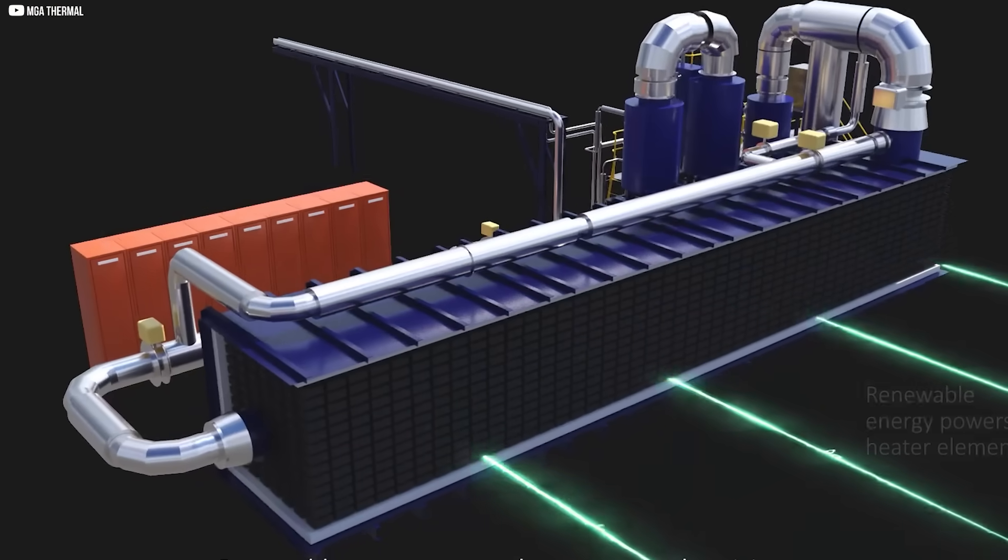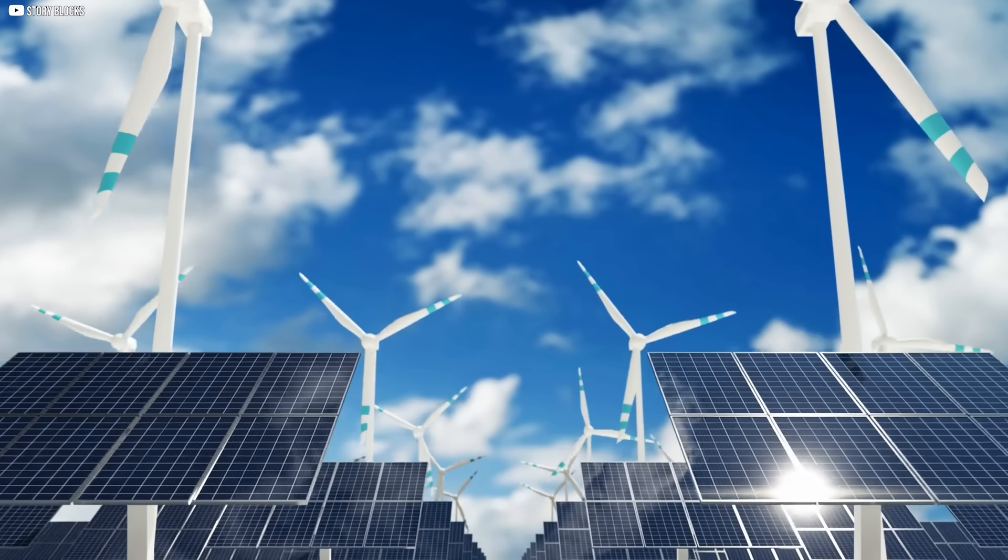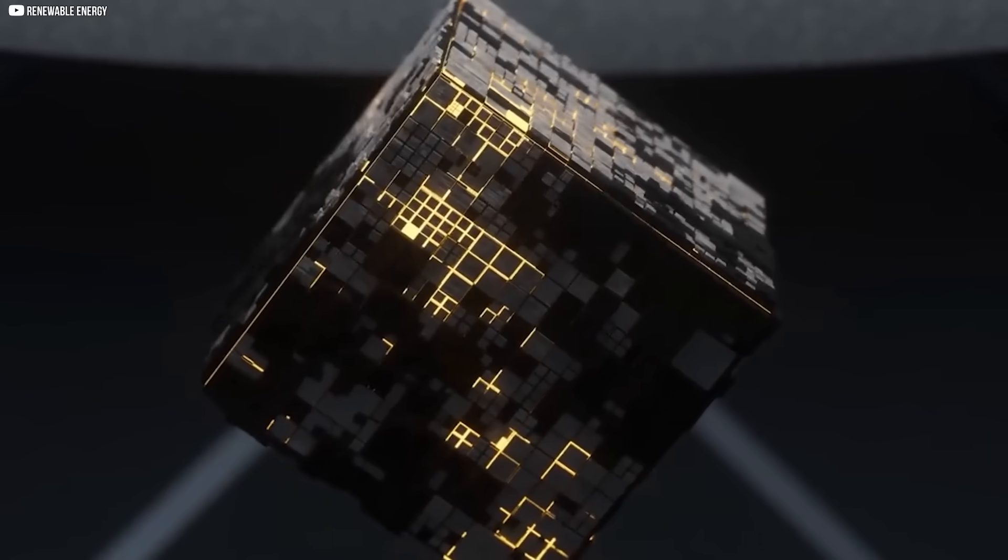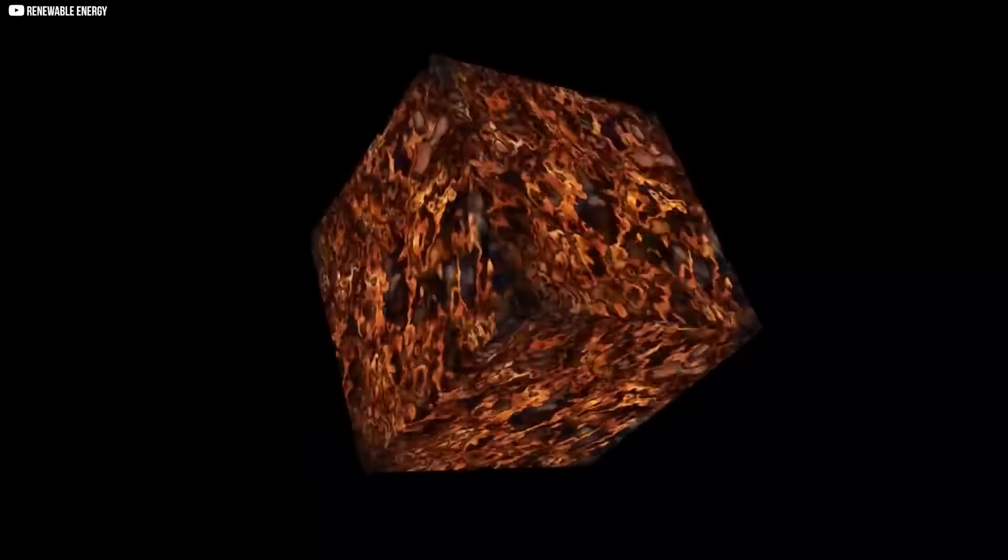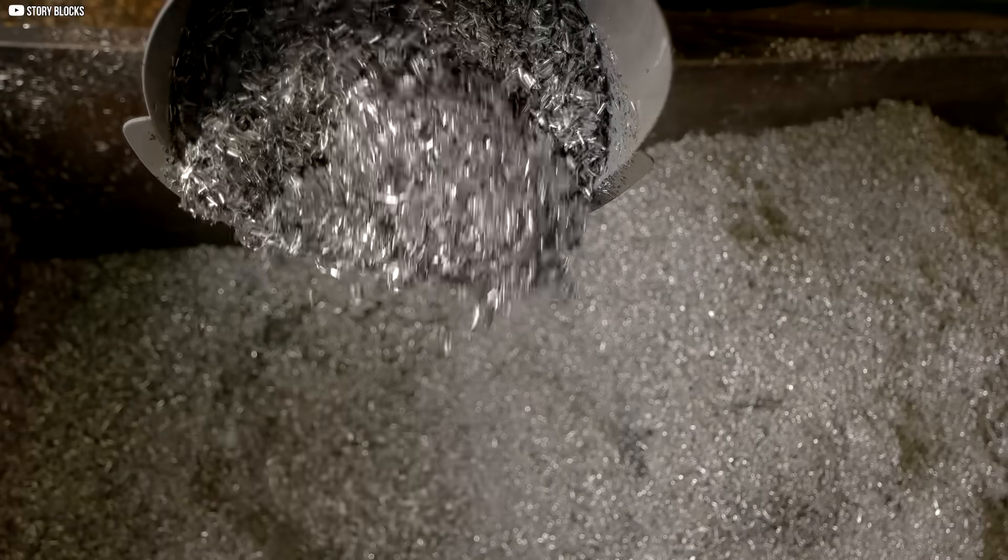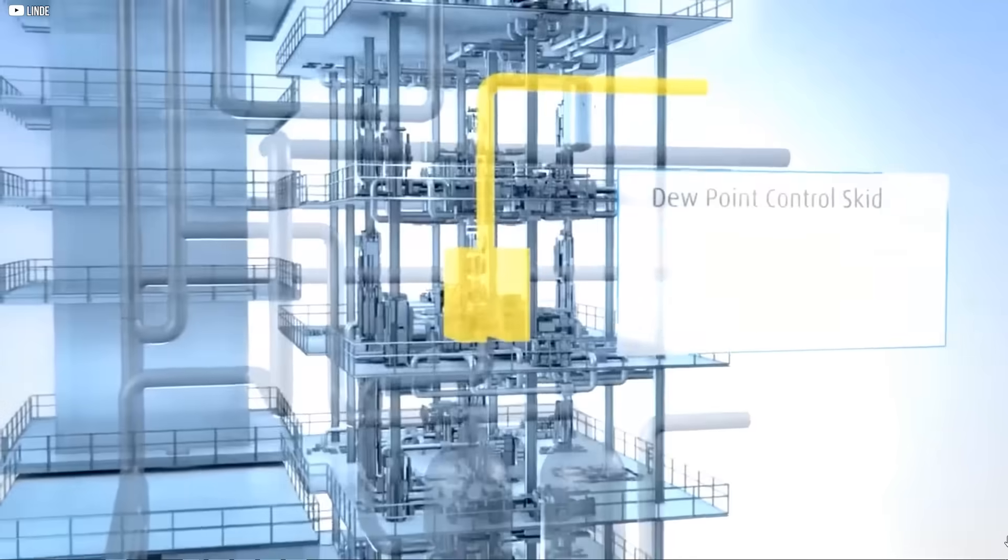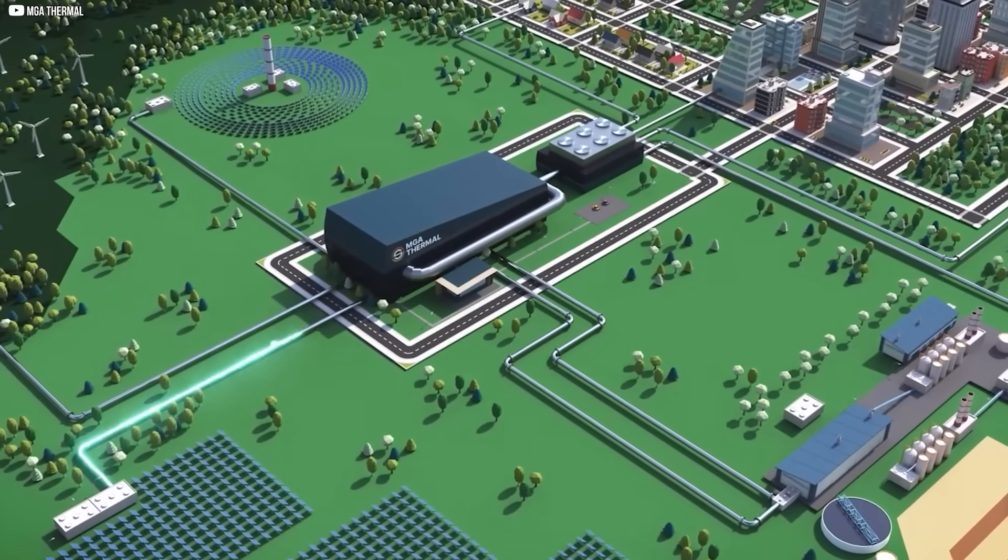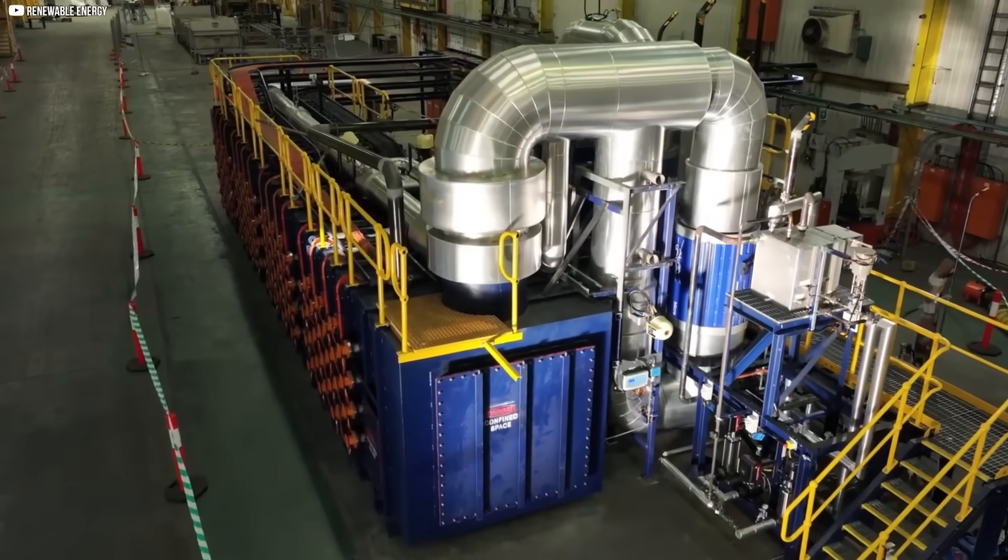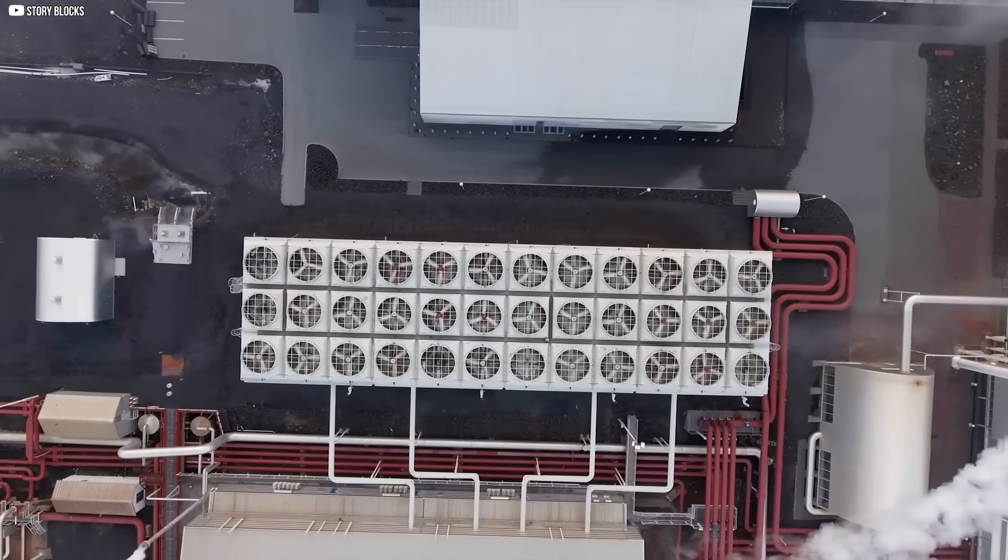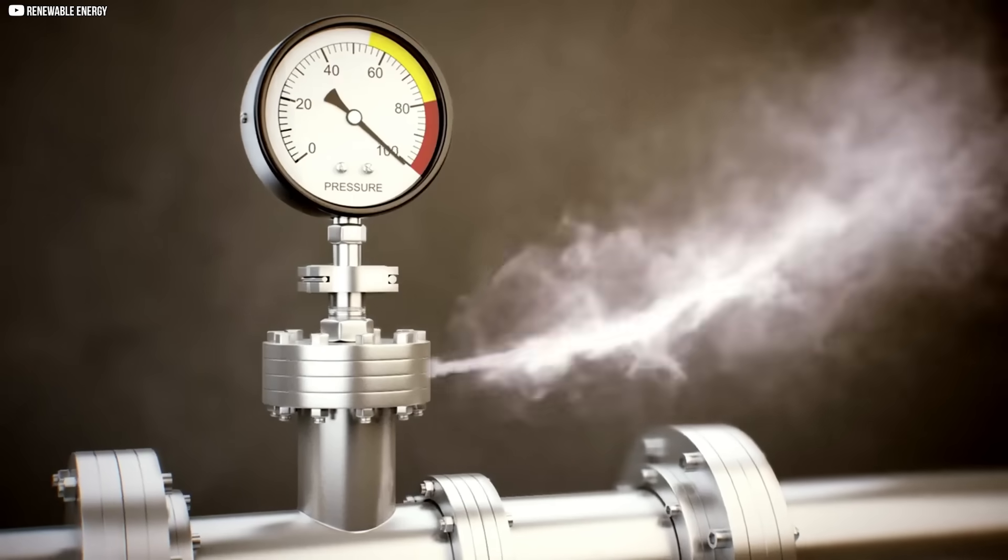Charging the system is simple in concept. Renewable electricity, solar, wind, is passed through resistive heaters that warm the blocks. The heat is stored deep inside. Thanks to that strange alloy blend. When it's time to use the energy, nitrogen gas flows through the unit, pulling heat into a steam generator. The result? Industrial-grade steam. Clean. On demand. Perfect for sectors that still rely on fossil-fired boilers.